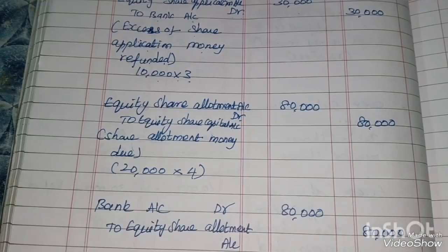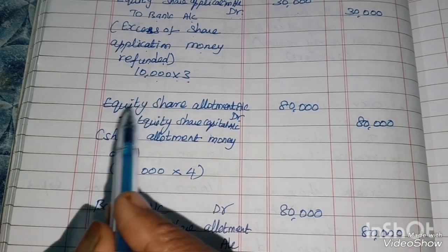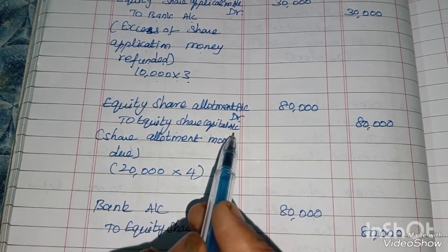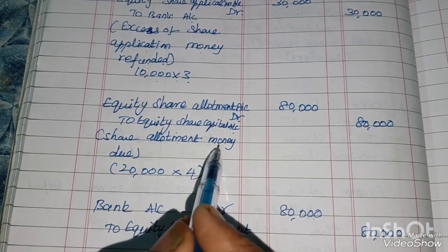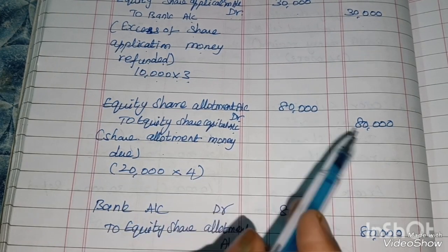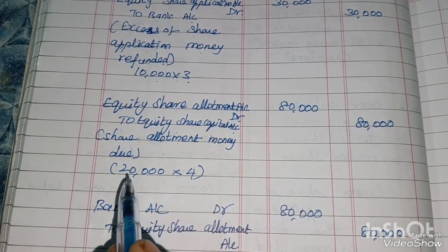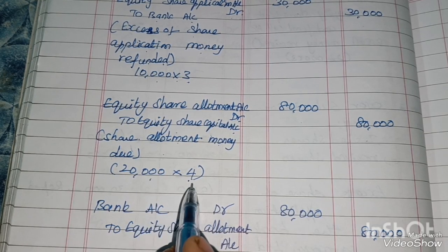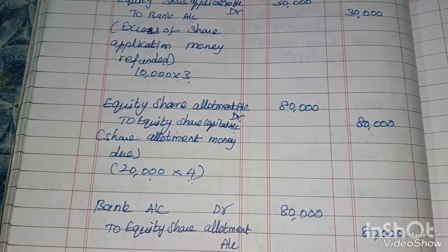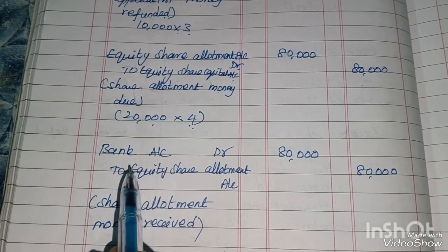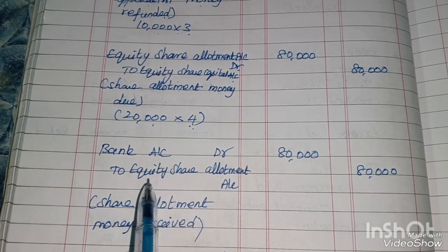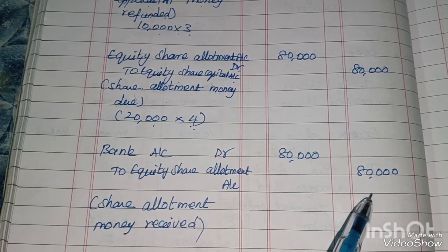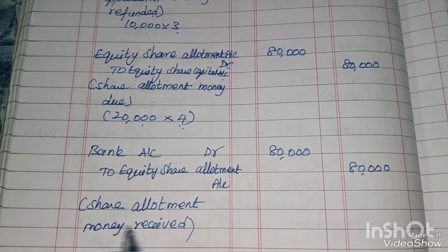Entry 4 – Share allotment money due: Equity Share Allotment Account Dr. to Equity Share Capital Rs.80,000. (20,000 × Rs.4 = Rs.80,000.) Entry 5 – Share allotment money received: Bank Account Dr. to Equity Share Allotment Account Rs.80,000 — Share allotment money received.